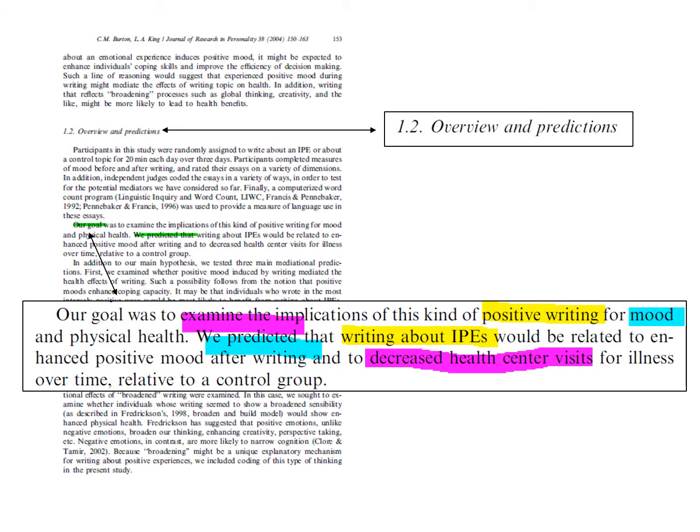The formatting of the Journal of Research and Personality helps make it easier to find the focus. It includes the heading Overview and Predictions on page 153 of the article, which is page 4 of the PDF file. Burton and King provide both a goal and a hypothesis, signaled by the phrase,